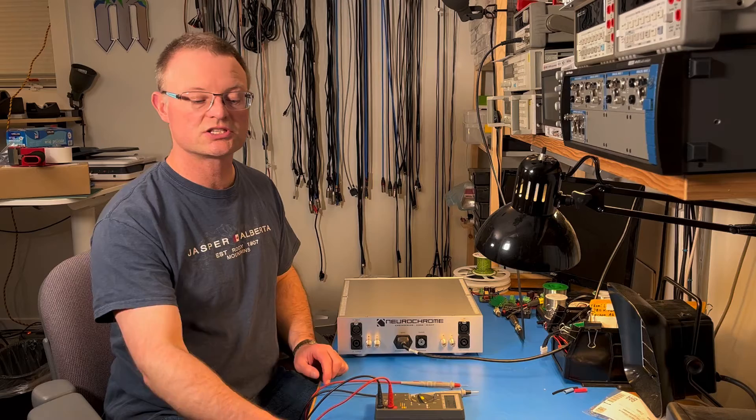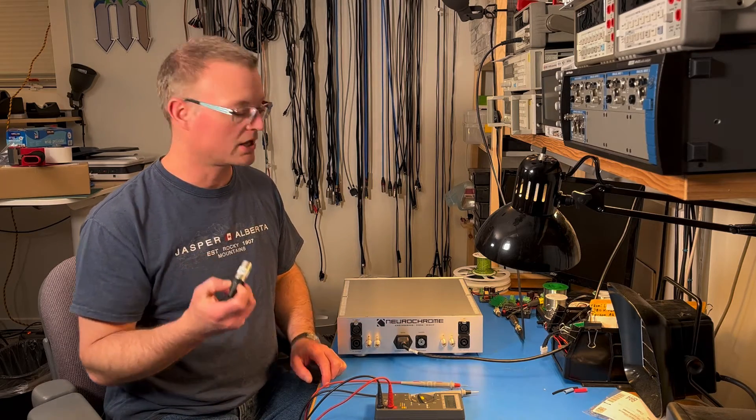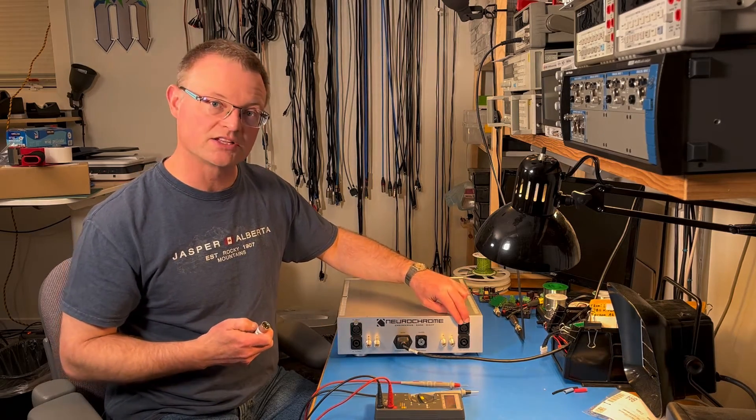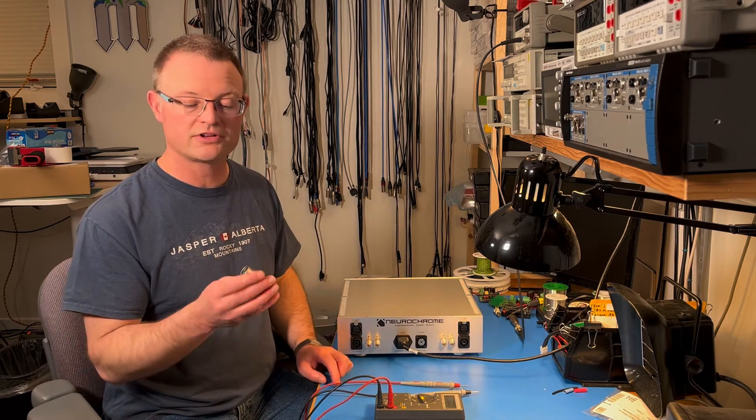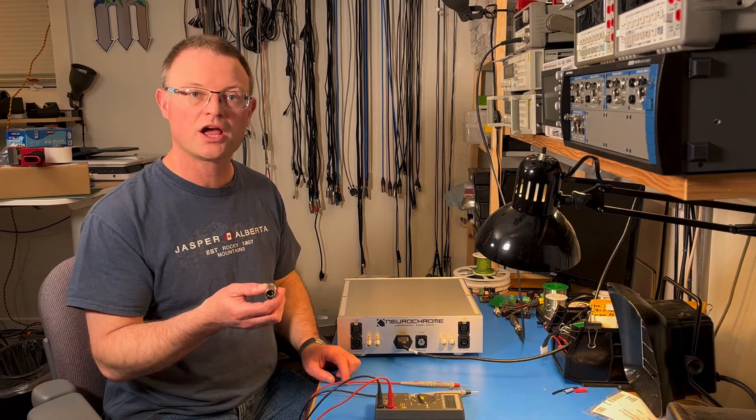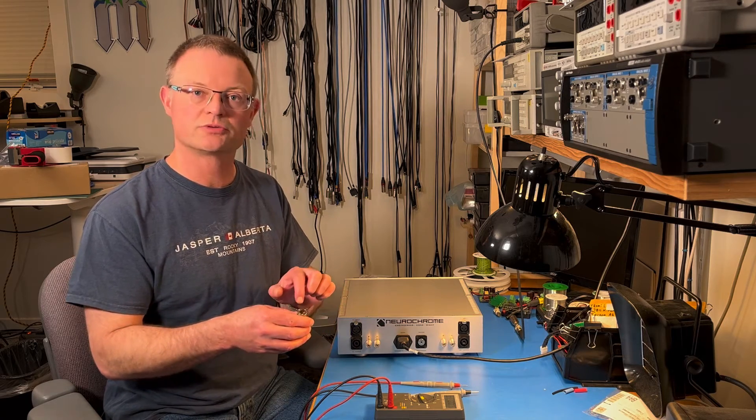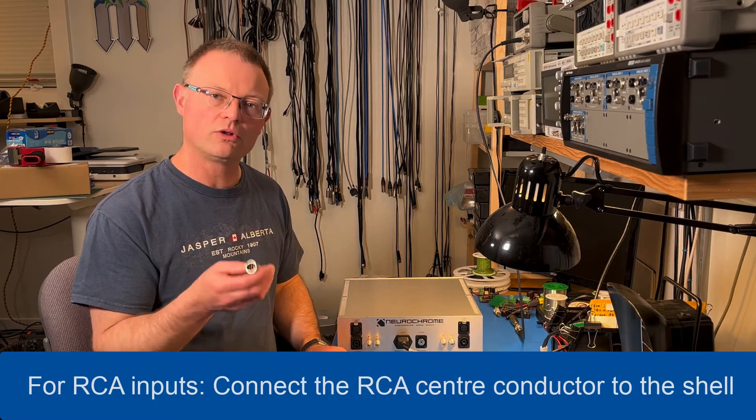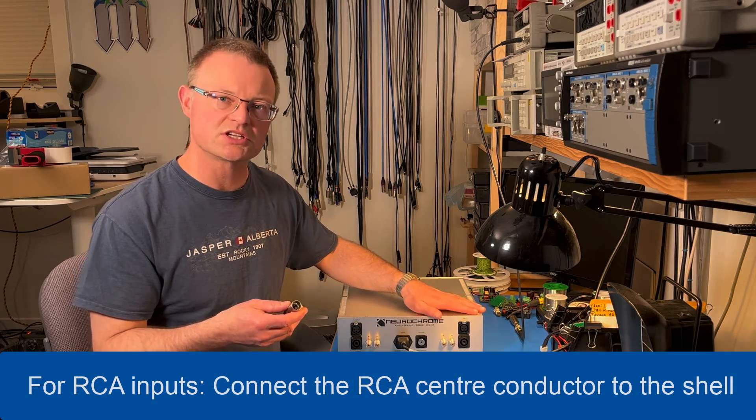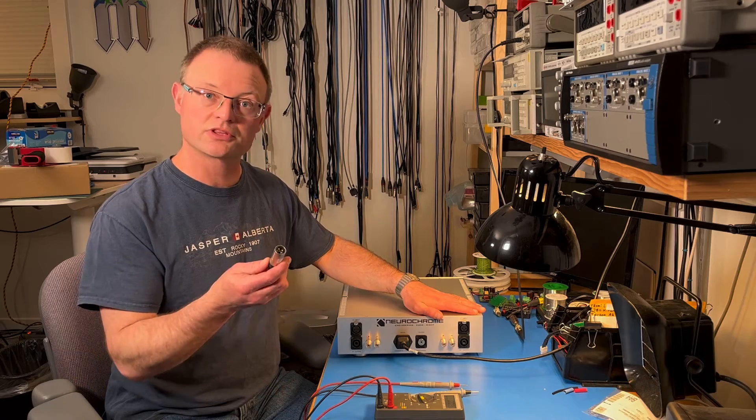Well, the easiest is with a shorting plug. So I've made one of these and since this amplifier has balanced input, this is an XLR shorting plug. So all I've done here is inside this plug, I have connected pin one to pin two to pin three with a couple of short pieces of wire. And with all three pins connected, that means the amplifier will see zero volts. So I'll just plug this in.